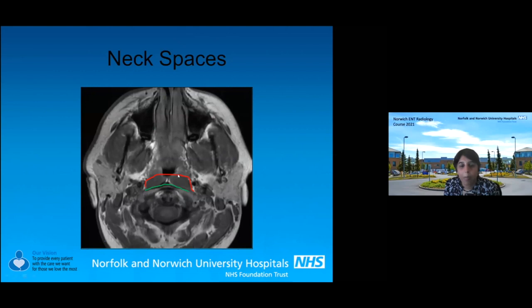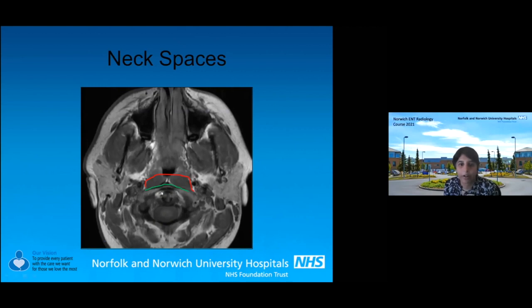There are medial and lateral retropharyngeal nodes. In kids, you quite often see both types — they're just so nodey. The nodes we see with oropharyngeal and nasopharyngeal cancers are lateral retropharyngeal nodes, just medial to the carotid artery. You have to look for them — if you don't look, you won't see them. Look medial to the internal carotid artery and that's where you'll find retropharyngeal nodes.